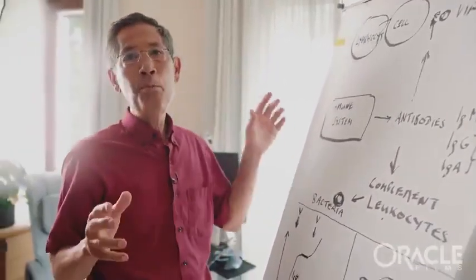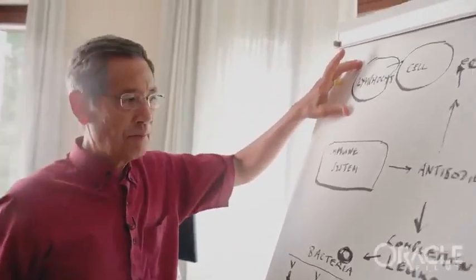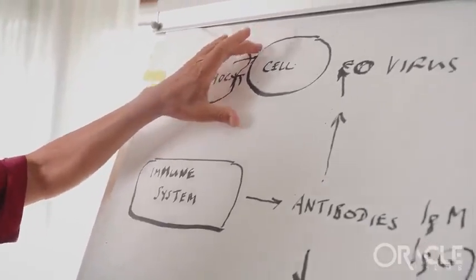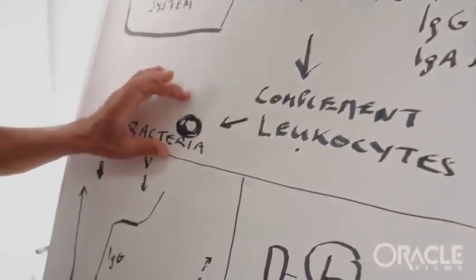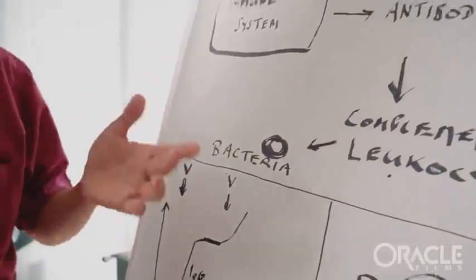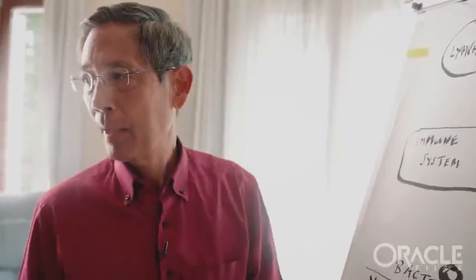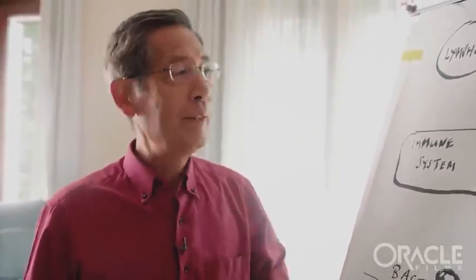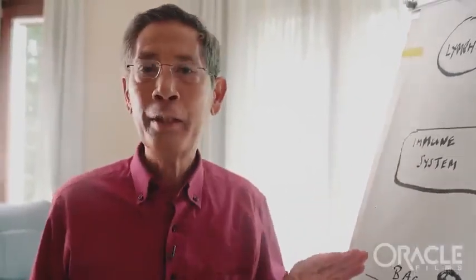So we have actually two major arms of the immune system. One are the lymphocytes that are directed against viruses and virus-infected cells, and the others are leukocytes that are directed against bacteria. It's like the Navy and the Air Force. And both are really deadly. They take care of all the viruses that you are confronted with and all the bacteria normally.